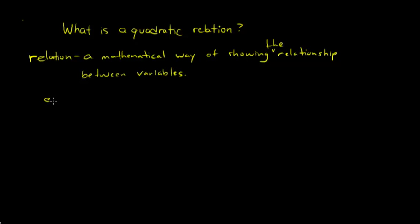So a mathematical way of showing the relationship between variables. For instance, we have a relationship like area equals length times width. For a rectangle, the relationship between area, length, and width is expressed mathematically with that formula, with that equation. Now that itself is not a quadratic relation. It's just a type of relation. A quadratic relation is a very specific type of relation.